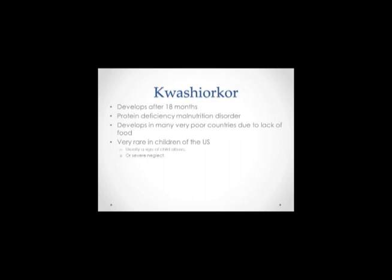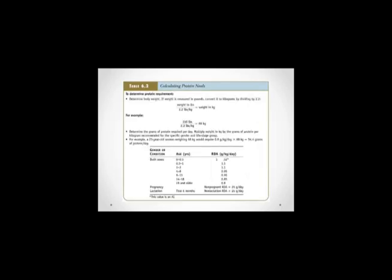Kwashiorkor is a protein deficiency malnutrition disorder, and it develops in children and infants after 18 months. It also develops in many poor countries due to the lack of food, and is very rare in children of the United States, only seen in cases of severe child abuse and neglect. The RDA requires that infants between 0 and 6 months have 0.52 grams of protein daily. This increases to 1.5 after one year, and to 1.1 between ages 1 and 3. A decline occurs from ages 4 to elderly, showing that protein is of vital importance to infant development.